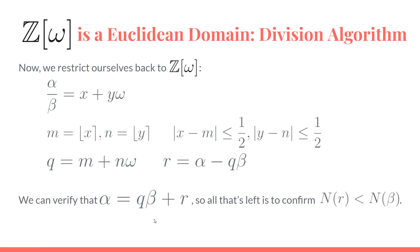So now we have that part of the division, and now we just need to confirm if the norm of r is less than the norm of β.